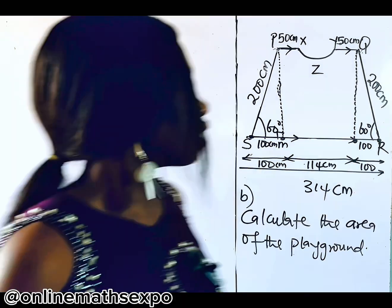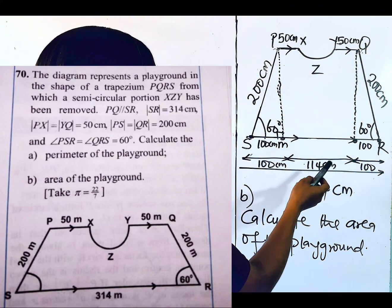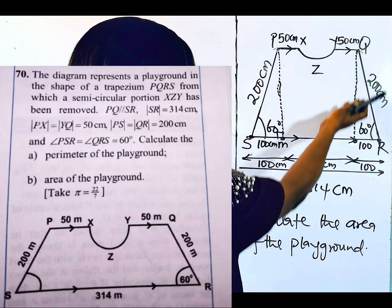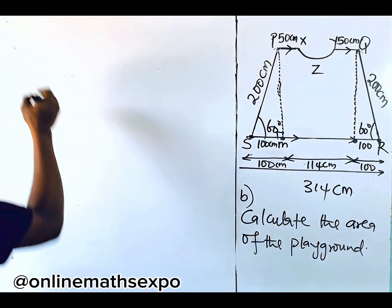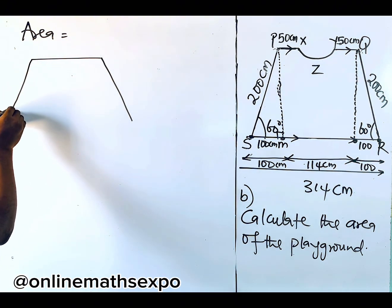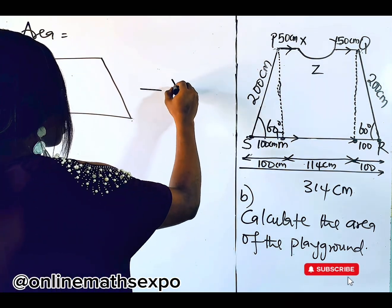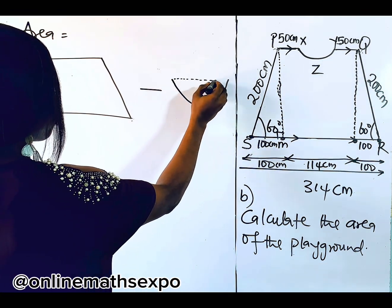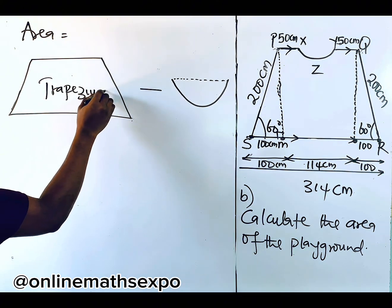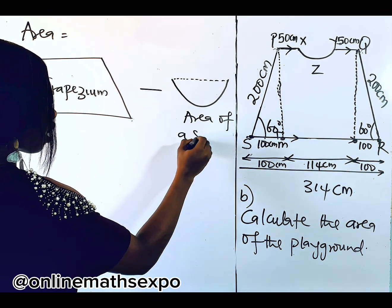Now to find the area: remember it is a trapezium that had a semi-circular part taken off. To calculate the area, you do the area of the total trapezium, then take away the cut-off part — the semi-circular part that was removed. So: area = area of trapezium minus area of a semi-circle.